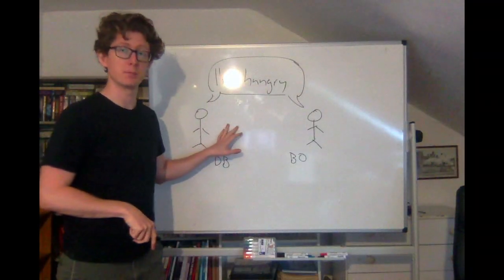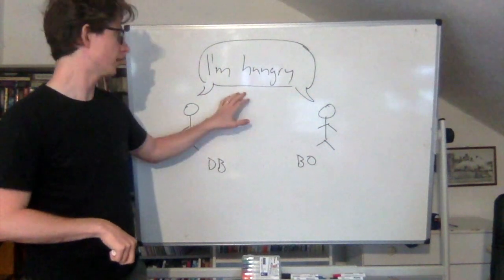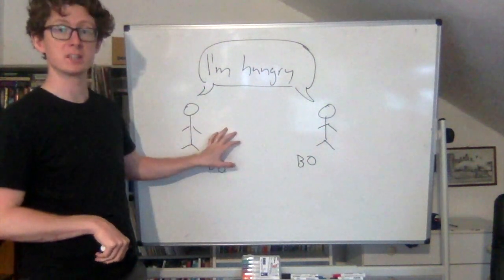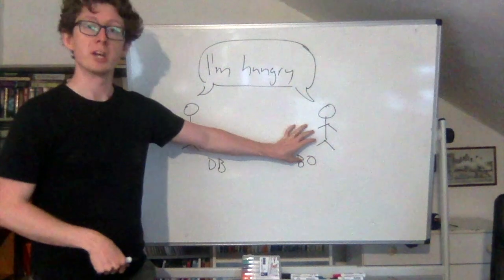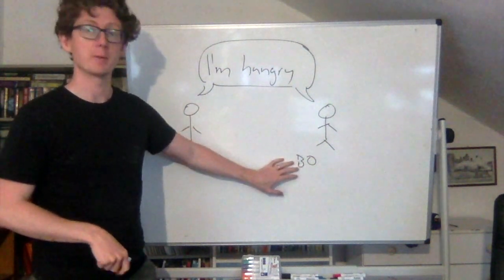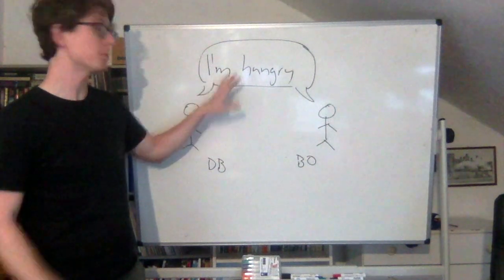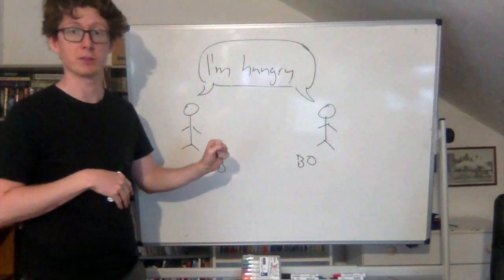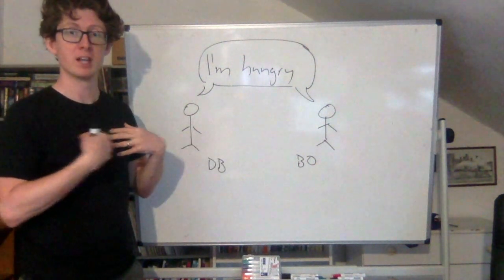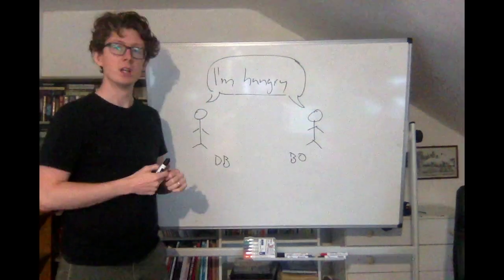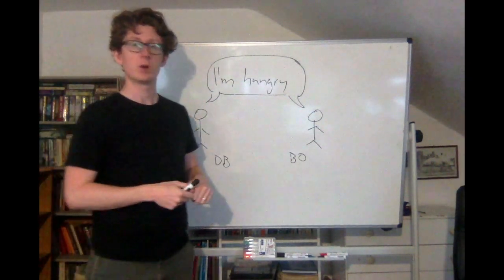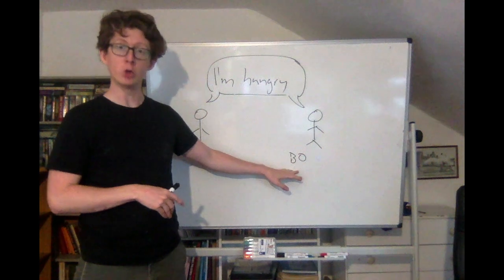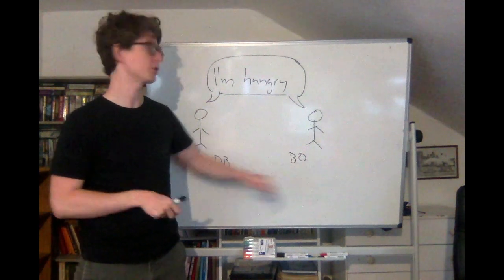Let's focus again on the simple example — the sentence 'I'm hungry' being said by two different people in two different contexts. Imagine in one context it's being said by me, David Boylan, and in another context it's being said by Barack Obama. In some sense, I'm saying the same thing as Barack Obama. But in a different sense, we're saying different things — I'm saying 'David Boylan is hungry,' and Barack Obama is saying 'Barack Obama is hungry.' Even though the propositions we're asserting are different, the same rule is being used in both cases to determine what proposition that is.